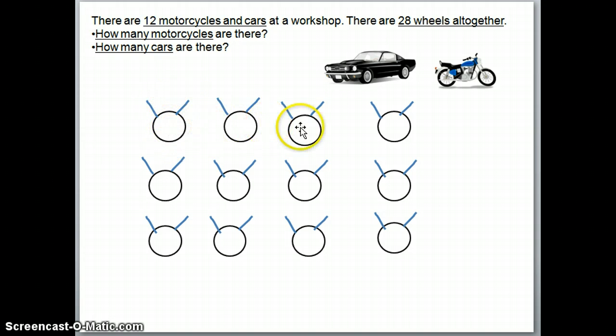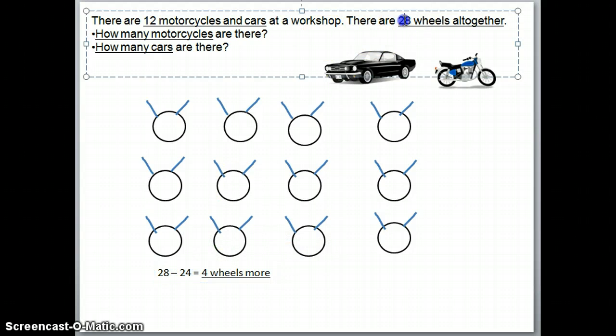So, 2, 4, 6, 8, 10, 12, 14, 16, 18, 20, 22, 24. So, there are 24 wheels if they are all motorcycles. But then we got a problem. If all of them are motorcycles, there are 24 wheels, we have a problem.